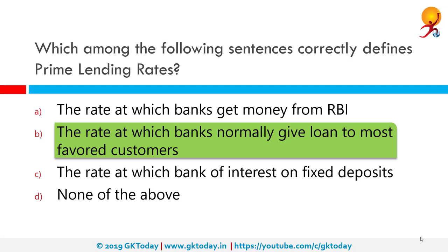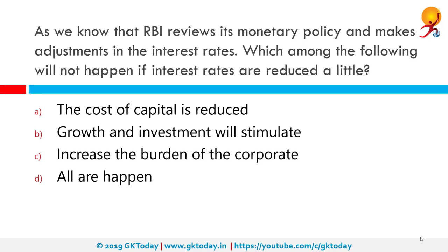Which among the following sentences correctly defines prime lending rate? The correct answer is the rate at which banks normally give loans to their most favored customers. A prime rate or prime lending rate is an interest rate used by banks — usually the interest rate at which banks lend to favored customers who have good credit scores. Some variable interest rates may be expressed as a percentage above or below prime rate.